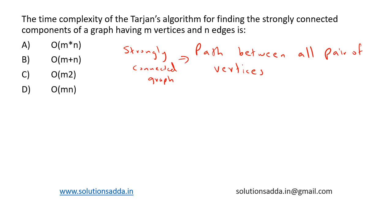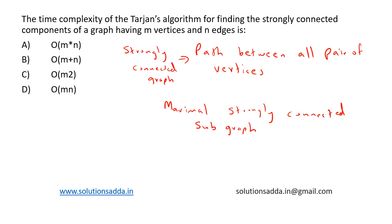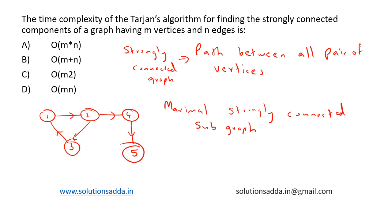Now, what is a strongly connected component? A strongly connected component of a directed graph is a maximal strongly connected subgraph. Consider this graph with vertices one, two, three, four, and five. Here we have three strongly connected components. One is this group, because there is a path between all pairs of connected vertices. This is another strongly connected component, and this is another strongly connected component.